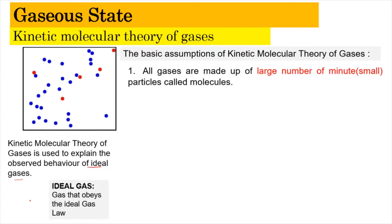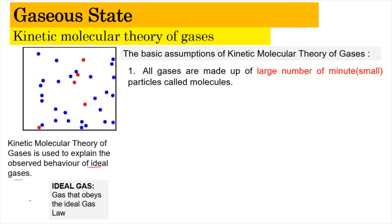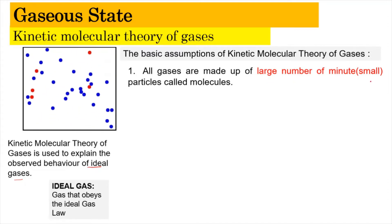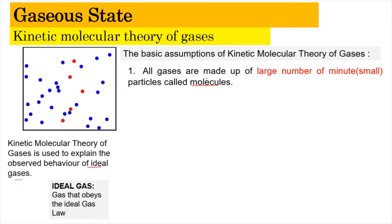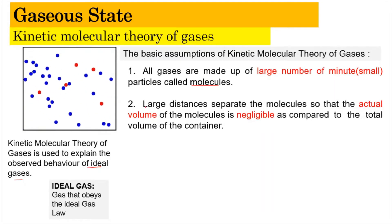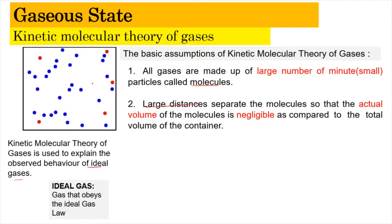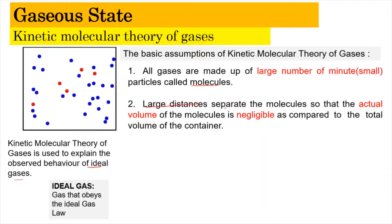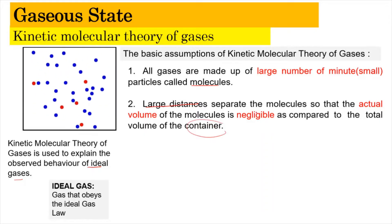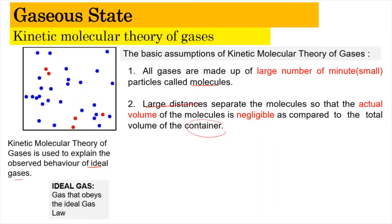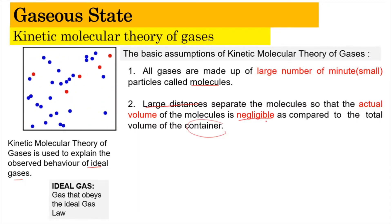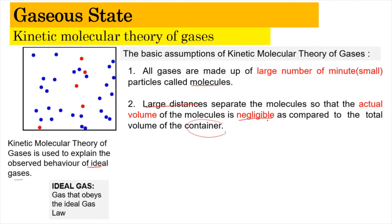Assumption number one: gases are made up of a large number of small particles known as molecules. These molecules need to be separated far apart from one another, so we assume the volume of the gas itself is very small in comparison to the volume of the container — the volume of the gas is considered negligible.